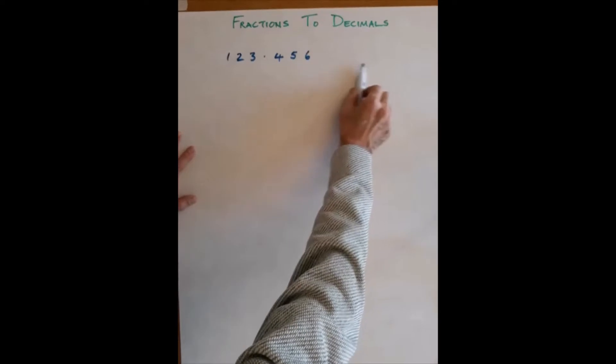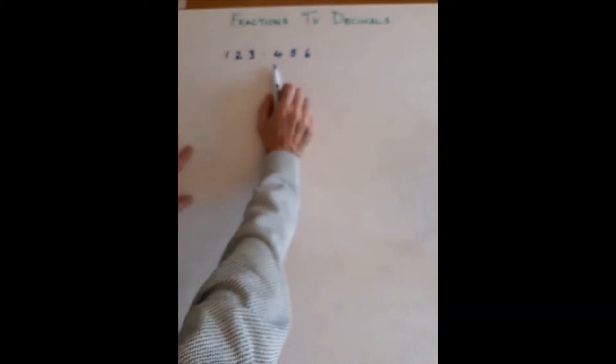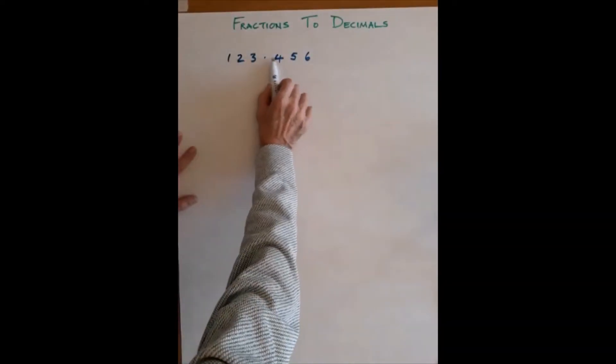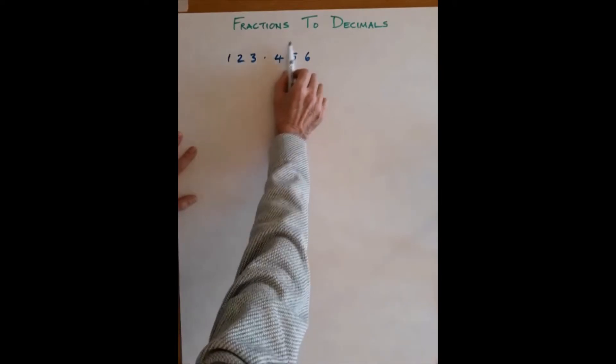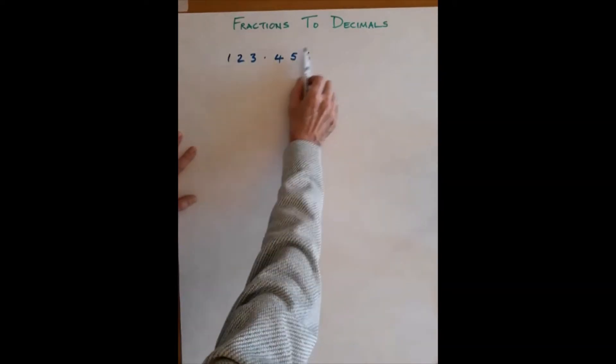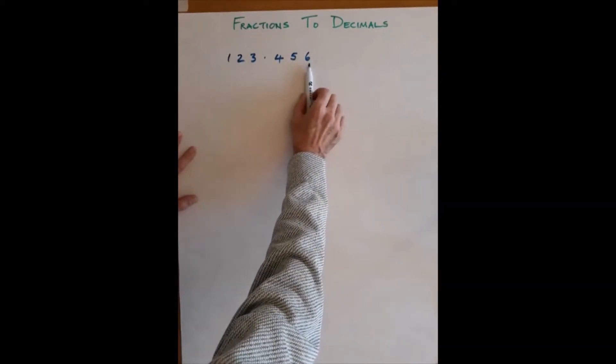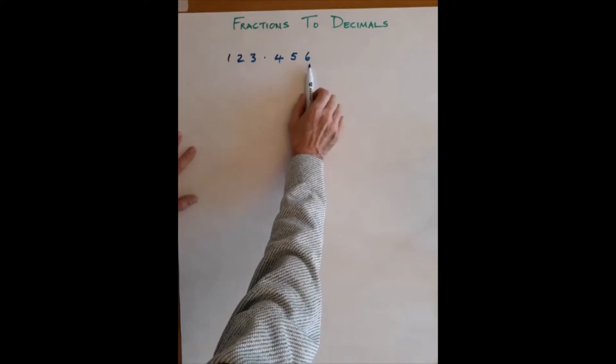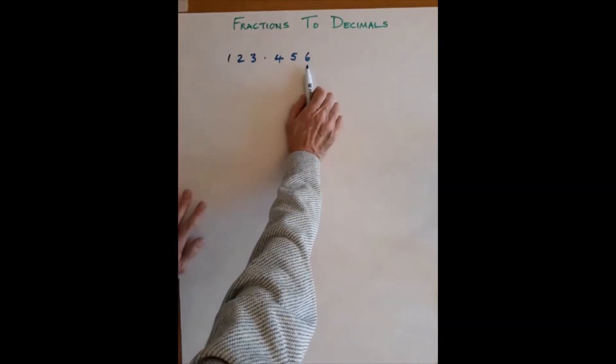Working to the right of the decimal point, which is where the core of our work is, the first digit is tenths, then hundredths, and thousandths. So with that in mind, let's have a look at some nice simple examples of converting fractions to decimals.